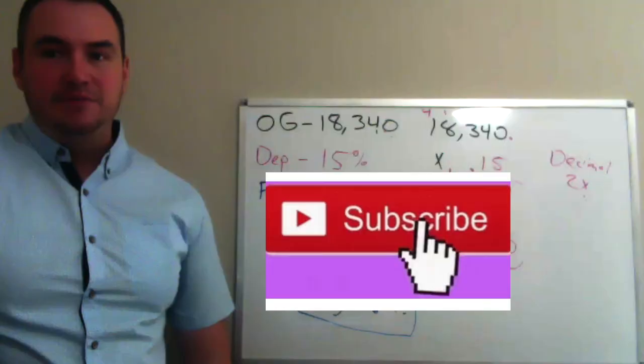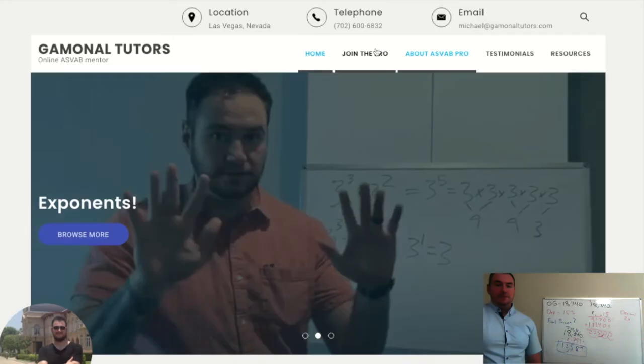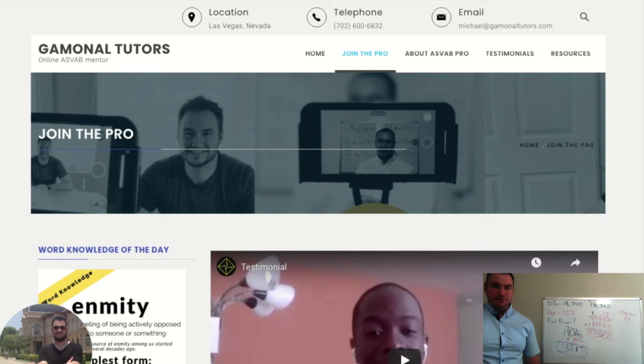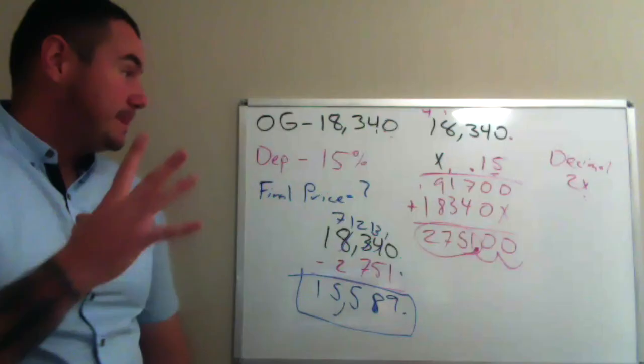If you like it, subscribe it. I have a free ASVAB Domination Facebook group. This is where these videos are posted. Go ahead and check that out. We like to support each other in there. And then, if you want to step up your level and get into my paid group, we're going to be starting in October. I'd love to have you there. At the end of the day, this is the arithmetic reasoning question of the day. Hit me up if you need any help. ASVAB Domination with Gammon All Tudors. Take care.